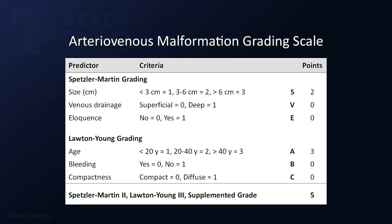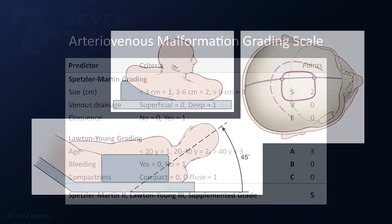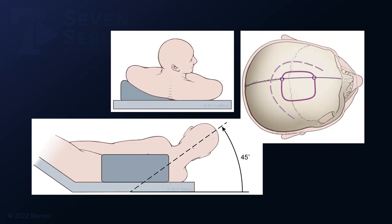This table shows the AVM grading. This is a Spetzler-Martin grade 2 AVM with 2 points for size, and a Lawton-Young grade 3 AVM with 3 points for age. A bifrontal craniotomy was selected with the patient supine, head turned 90 degrees to the right and angled upwards 45 degrees. Note that the craniotomy crosses the superior sagittal sinus.